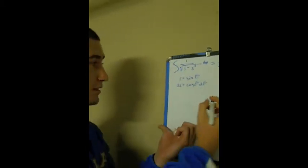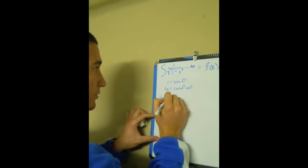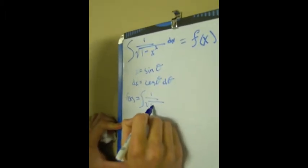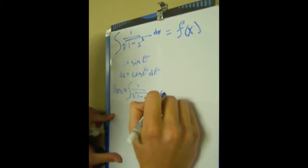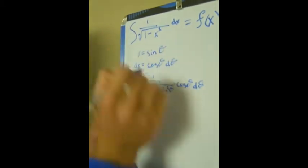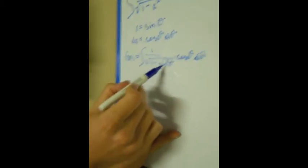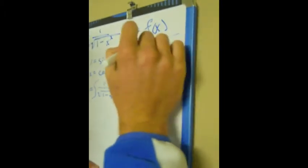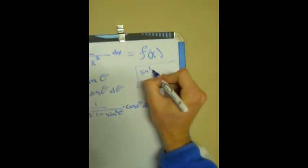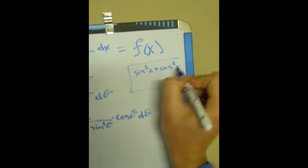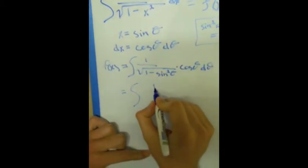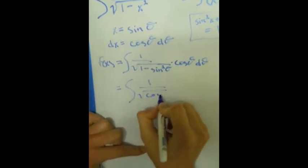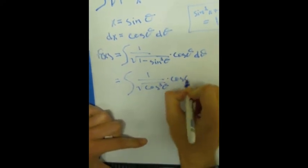Then dx is going to equal cosine of theta d theta. And then we're going to substitute back in. So we have the integral of 1 over the square root of 1 minus sine squared theta, times cosine theta d theta. We're substituting for dx there. And you'll notice that 1 minus sine squared is cosine squared, because sine squared of x plus cosine squared of x equals 1. So we have the integral of 1 over the square root of cosine squared theta, times cosine theta d theta.